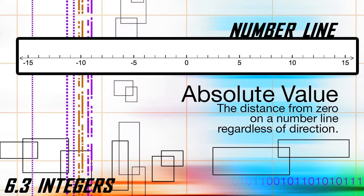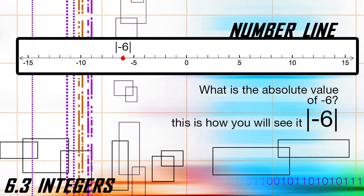When we talk about the absolute value of an integer, we are talking about the distance from zero that integer is on a number line, regardless of direction. For example, what is the absolute value of negative six? Step one, plot negative six on the number line. Step two, label that point using the absolute value notation — two bars to the left and right of negative six. Step three, count the units to return to zero. Step four, the absolute value of negative six is six because it is six units away from zero.